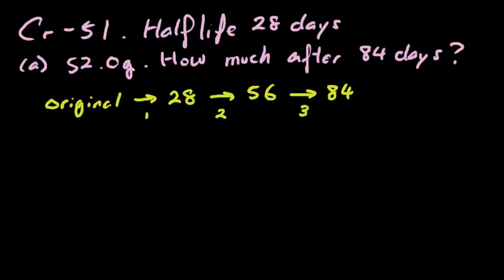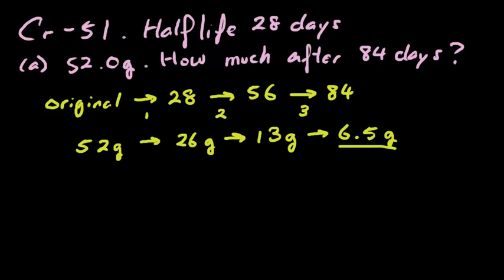So we just follow the same timeline. And we say, well we had 52 grams originally. After one half-life that sample gets cut in half. So we have 26 grams, half of 52. And we do this again. This is for the second half-life. We have 13 grams. And then our third and final half-life is going to give us 6.5 grams. So this is our answer. 6.5 grams will remain after 84 days.